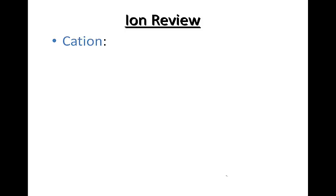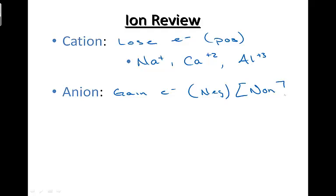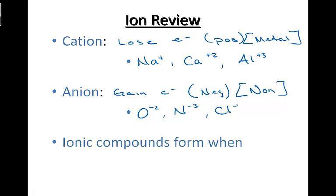Ionic compounds form when atoms form a cation — a cation loses electrons, resulting in a positive ion. Examples include sodium, calcium, and aluminum. Anions gain electrons, are negative, and are usually formed by non-metals, whereas cations are usually formed by metals. Examples of anions include oxygen, nitrogen, and chlorine. An ionic compound forms when a cation comes near an anion and the difference in charges attracts the molecules together.